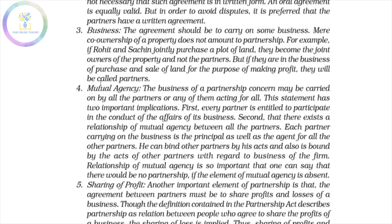The fourth feature is Mutual Agency. Each partner acts as an agent of the firm. One of them is acting for all, or all of them carry on the business. If you have a mutual agency, each partner can bind the others in business dealings and share profit and loss.